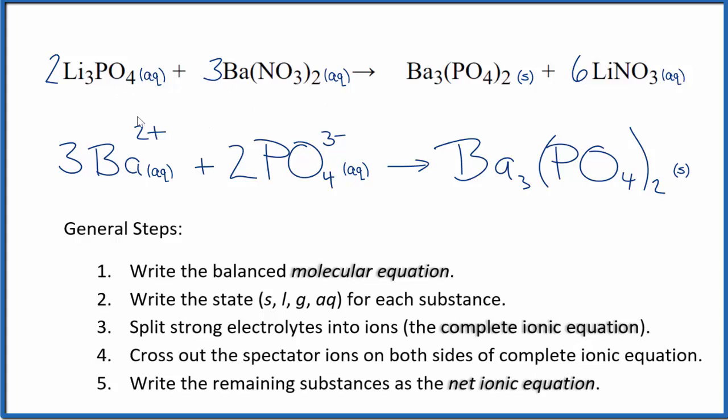You note that charge is conserved. Three times two plus, that's six plus. Two times three minus is six minus. That all adds up to zero, net charge of zero. Over here, barium phosphate is a neutral compound, so charge is conserved, and if you count the atoms up, they'll be balanced as well.